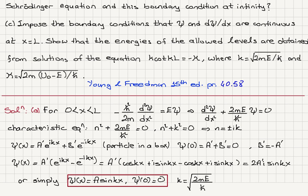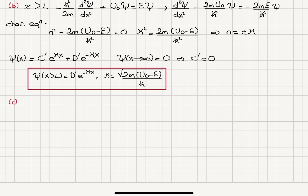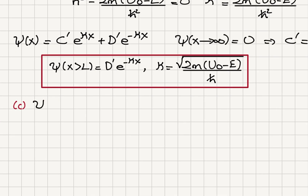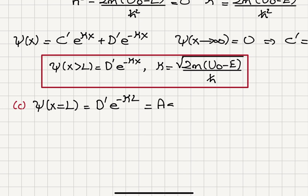Part C. Impose the boundary conditions that the wave function and its derivative are continuous at x = L. Show that the energies of the allowed levels satisfy k·cot(kL) = −κ, where k = √(2mE)/ℏ and κ = √(2m(u₀ − E))/ℏ. Looking at continuity at x = L: ψ(L) = D′e^(−κL) from Part B, and ψ(L) = A·sin(kL) from Part A.